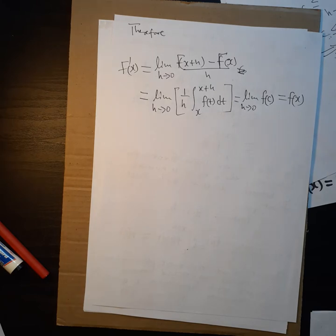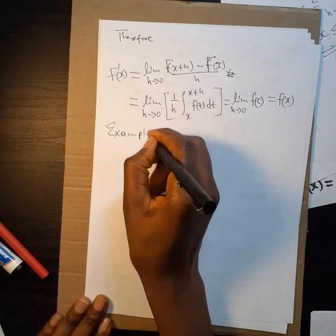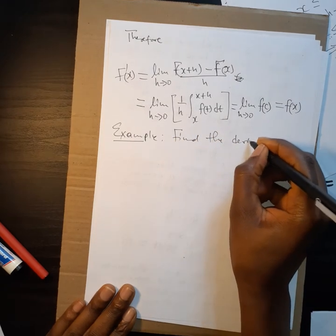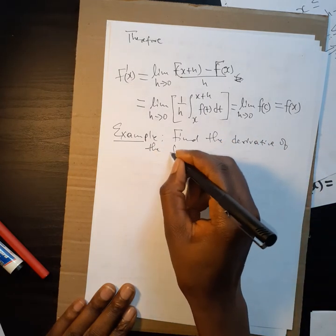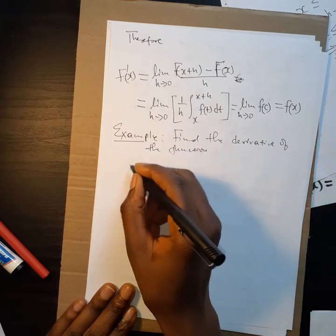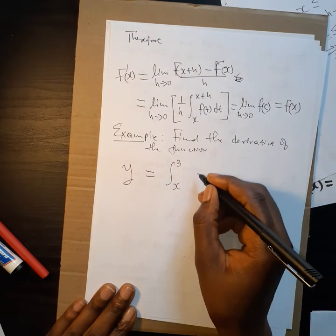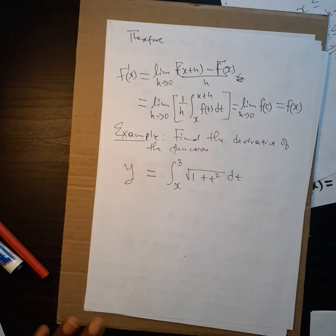The theorem is simply telling us that if you find the derivative of an integral, you just get the function under consideration. Let us look at some examples. We want to find the derivative of y = the integral from x to 3 of the square root of (1 + t²) dt.